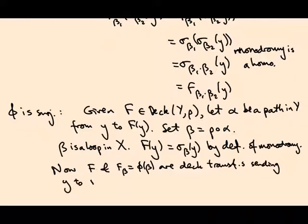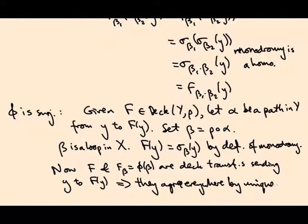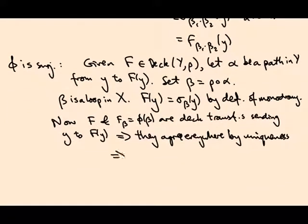Now F and Fᵦ (which is φ(β)) are both deck transformations sending y to the same point. By the uniqueness of covering transformations, F = Fᵦ. For every F, we can find a β such that F = Fᵦ. That proves surjectivity.